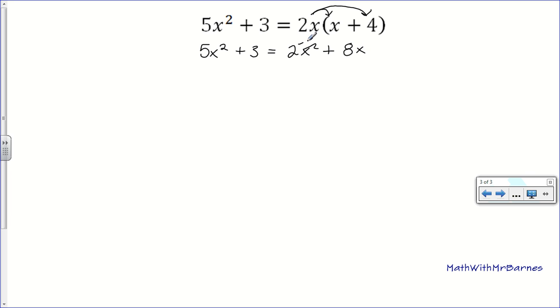So, I'll subtract 2x squared, so I get 3x squared plus 3 is equal to 8x. And then, I'll subtract 8x from both sides. So, I get 3x squared minus 8x plus 3 is equal to 0.